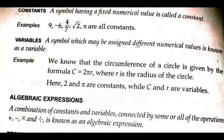Before I define polynomial, let me define a few important terms which we are going to use in this chapter most frequently. The very first is constant. A symbol having a fixed numerical value is called a constant. For example, 9, minus 6, 4 by 7, root 2, and pi are all constants.